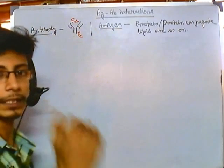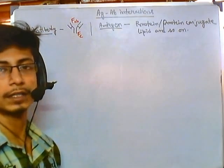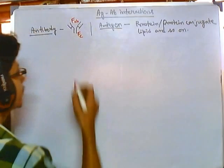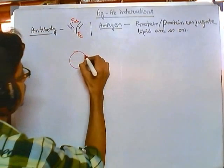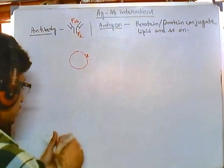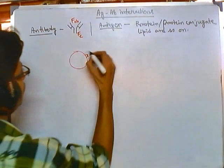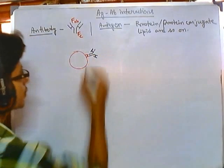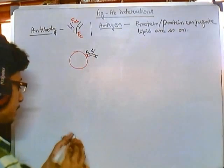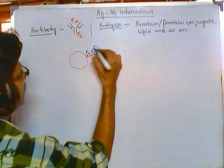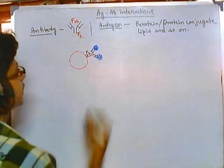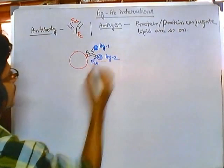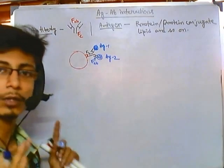The FC region is simply the region for recognition of the target. For example, in the complement system, there is a receptor on the surface of a red blood cell where the FC region can bind — so the antibody binds with its FC receptor region. The antigen, on the other hand, is attached at the FAB portions — antigen 1 here and antigen 2 here are both attached with FAB portions. This is the type of interaction we are going to look at.